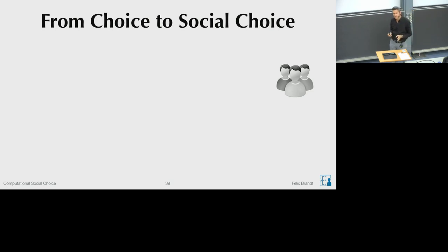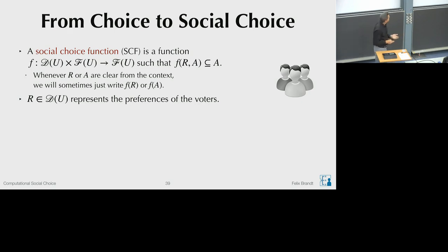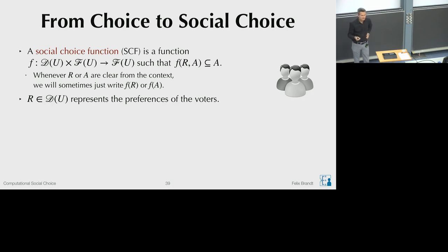We introduce the formal framework for social choice. The main type of function is a social choice function, which maps a feasible set to a subset of alternatives—just like a choice function—but with an additional parameter R from the set D(U). Elements of D(U) represent the preferences of the voters, and based on these preferences we make a choice. F takes as input some variable R and a feasible set, then chooses a subset of the alternatives, extending choice theory by adding voters' preferences as input.